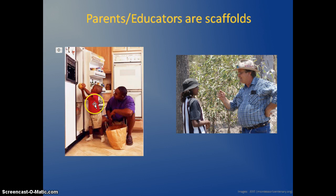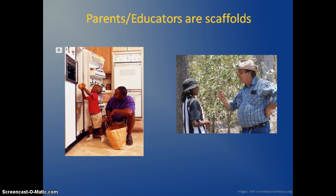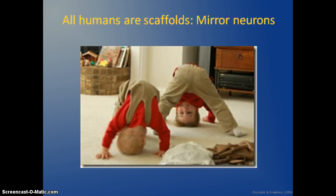This parent is helping as a scaffold so that the child can do it himself, but not alone — because he can't do it entirely on his own. The adult gives him something that will help him: just take the grapefruit, put it on the shelf, hand him one thing at a time. All humans are actually scaffolds, whether we realize it or not, because we have mirror neurons.